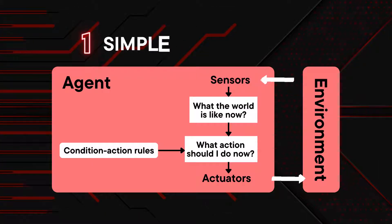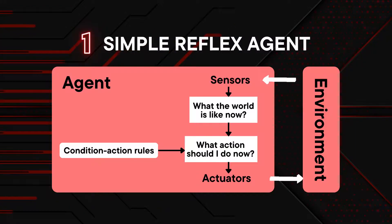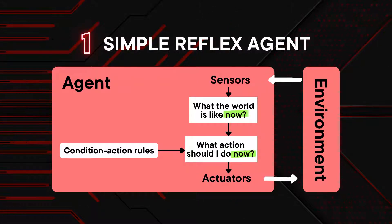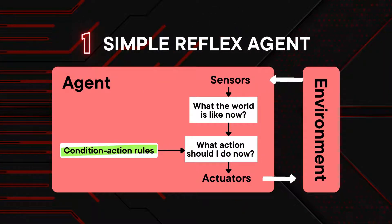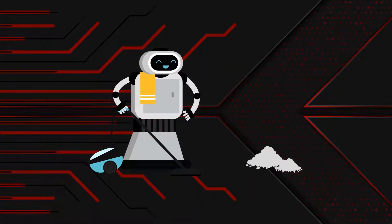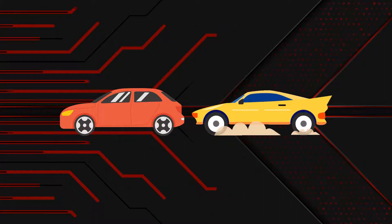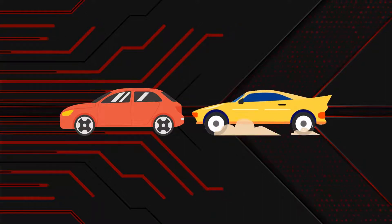A simple reflex agent selects actions on the basis of the current percept, ignoring the rest of the percept history. This means that it only cares about now. It directly maps the condition to the action using rules. For example, if dirty, then vacuum. Or, if car in front, then brake.